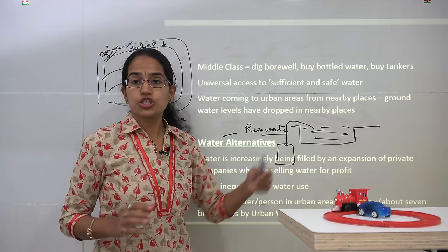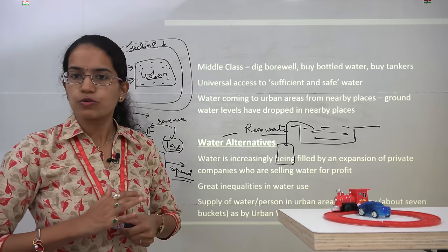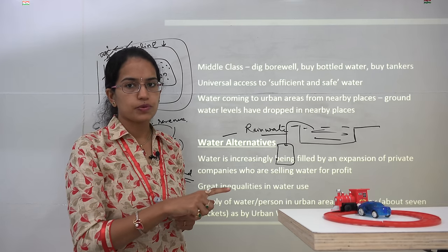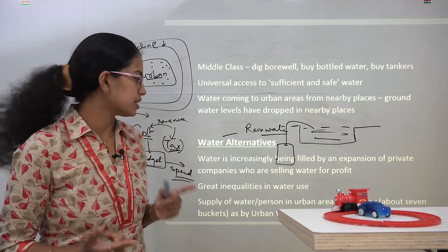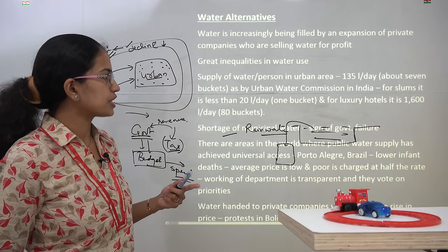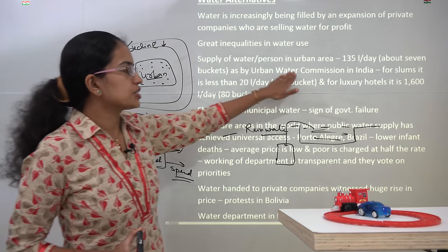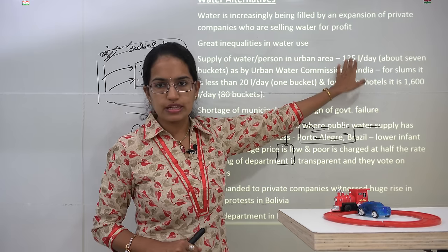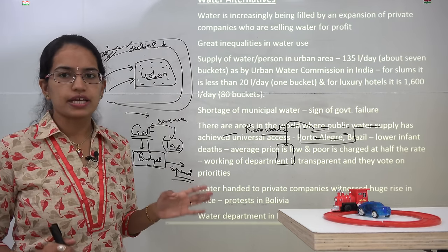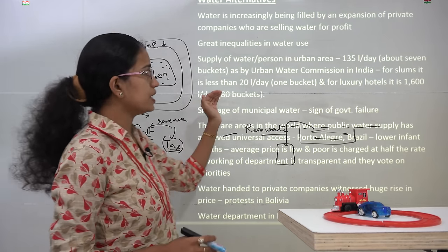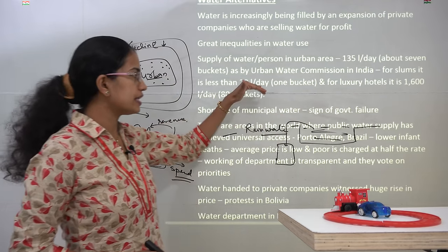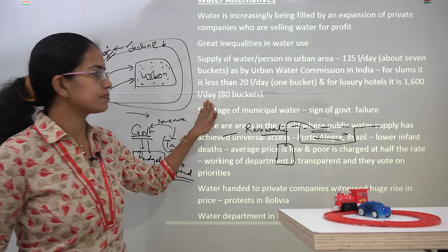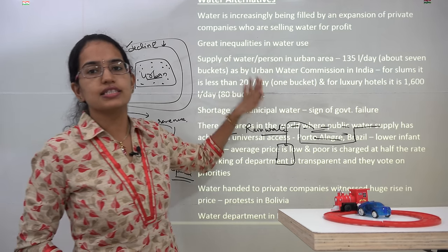If private companies increase their role further, it would bring a higher burden on the poor class and economies of scale would be disturbed, resulting in more inequalities in water use. The Urban Water Commission of India suggests a supply of around 135 liters per person per day in urban areas — about seven buckets. However, in slums it is only 20 liters per day, that's one bucket, while luxury hotels use around 1,600 liters per day — about 80 buckets. That is the disparity we need to resolve.